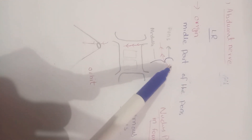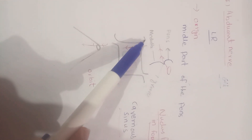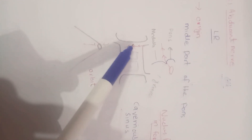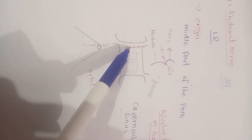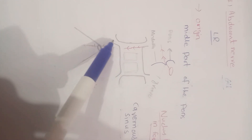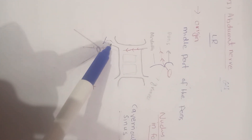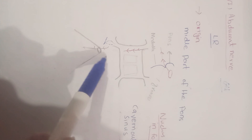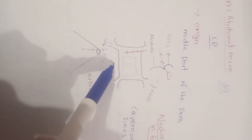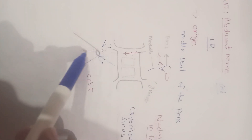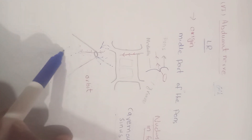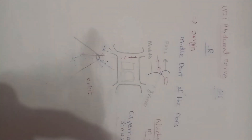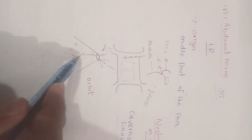The groove is present between the medulla and pons. After passing through this groove, the abducens nerve enters into the cavernous sinus, and after passing through the cavernous sinus, it passes through the superior orbital fissure into the orbit and supplies the lateral rectus muscle.